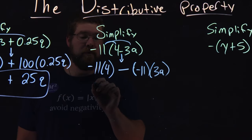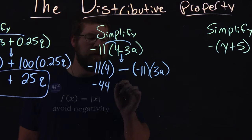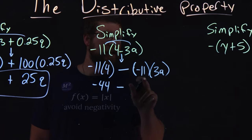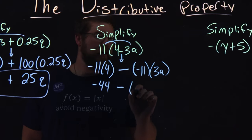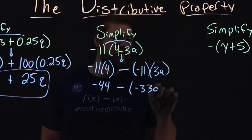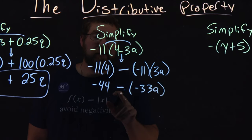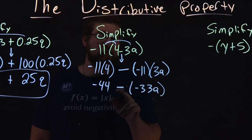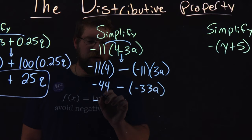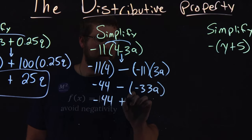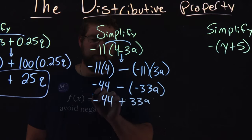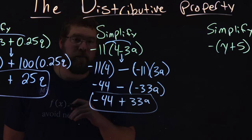From there, we simplify. Negative 11 times 4 is negative 44. And then, we have minus here. Negative 11 times 3a is negative 33a. Now, we have a double negative. Two negatives make a positive. So, we have negative 44 here, plus 33a. And that's how it's simplified.